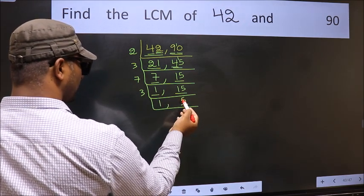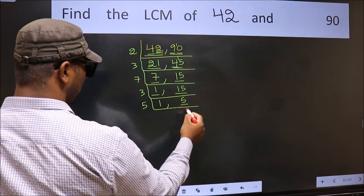Now we have 5. 5 is a prime number. So 5 times 1 is 5.